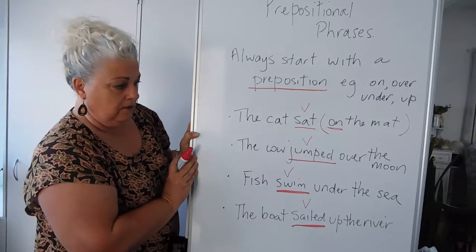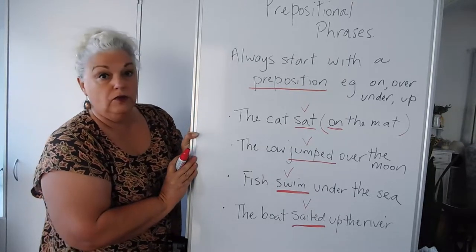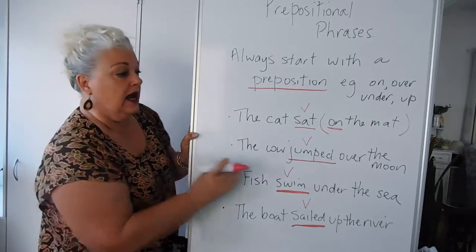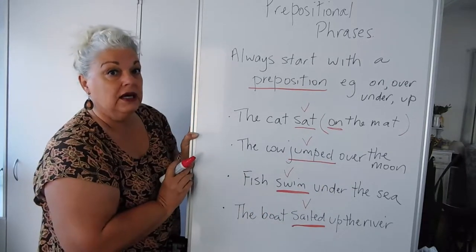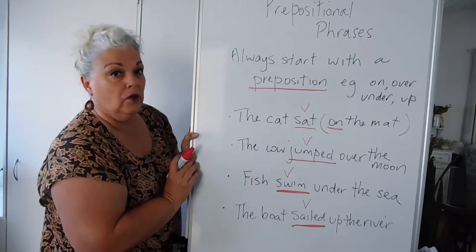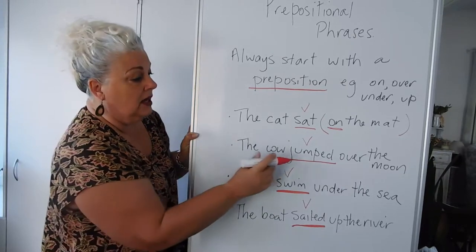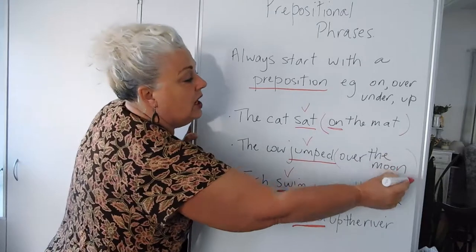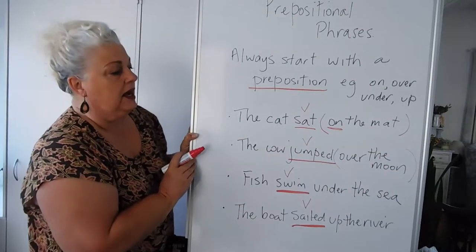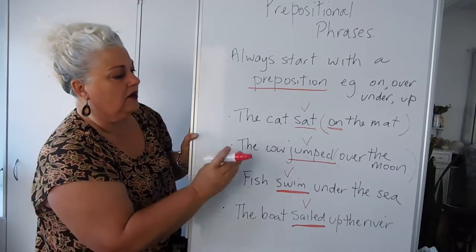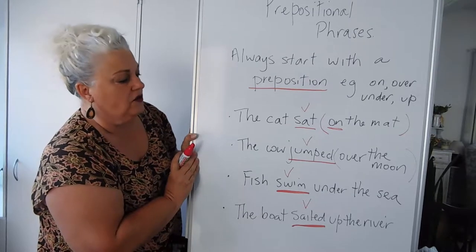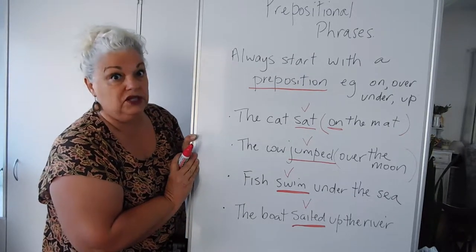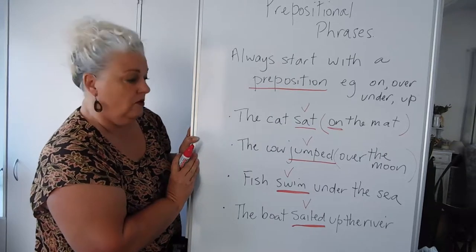The second one: the cow jumped over the moon. Again, a simple sentence. It has a verb, jumped. It has a subject — what jumped? — the cow jumped. And it has additional information about the action that occurred. It occurred over the moon, so the cow jumped over the moon. The position of the jump was over the moon.